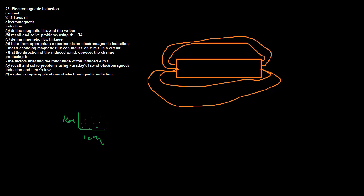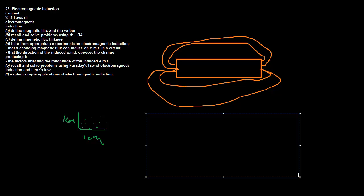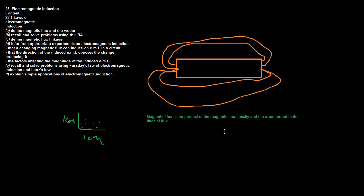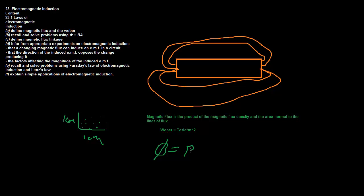So what's the formal definition of magnetic flux? Magnetic flux is the product of the magnetic flux density and the area normal to the lines of flux. The unit of magnetic flux is the Weber, which equals Tesla times meters squared. Tesla can also be defined as Webers per meter squared if you want to look at it the other way around. The formula for magnetic flux uses this symbol here, and it equals magnetic flux density times area.